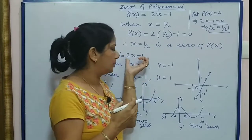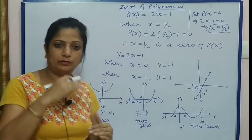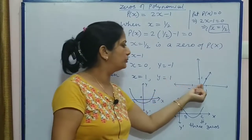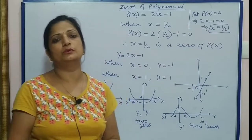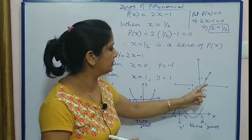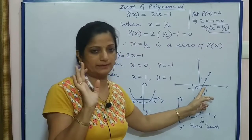Jo bhi graph aap polynomial ka draw karein, woh x-axis ko kitne points par cut karta hai, that number of points is known as zeros of that particular polynomial. For example, in this polynomial only one zero exists.